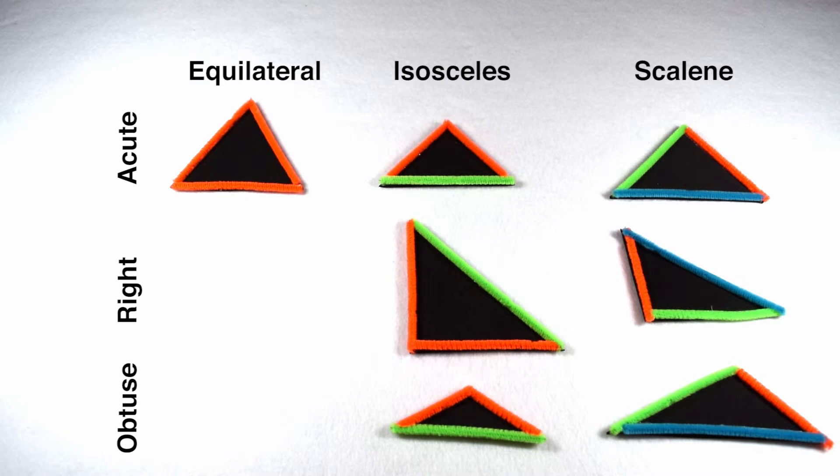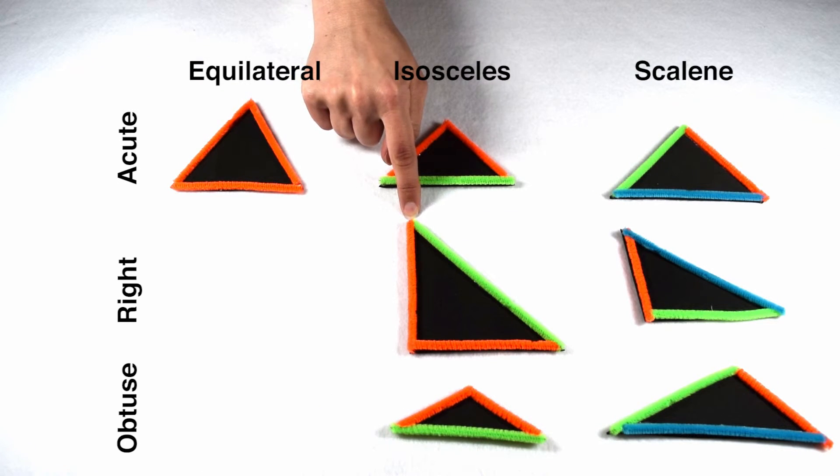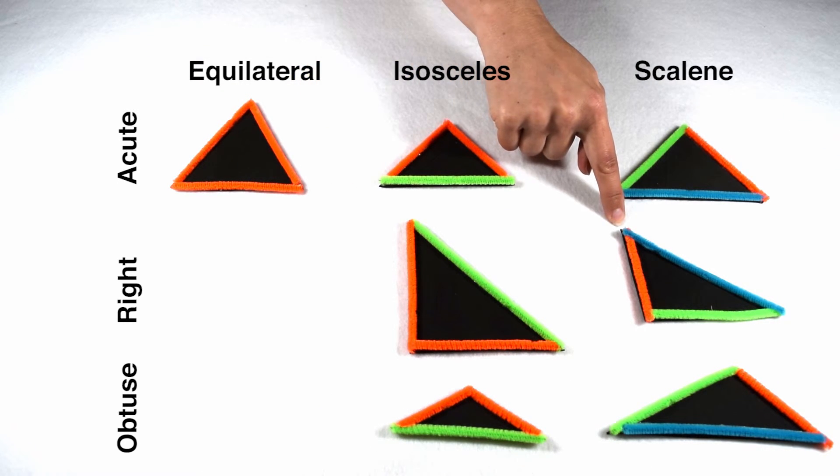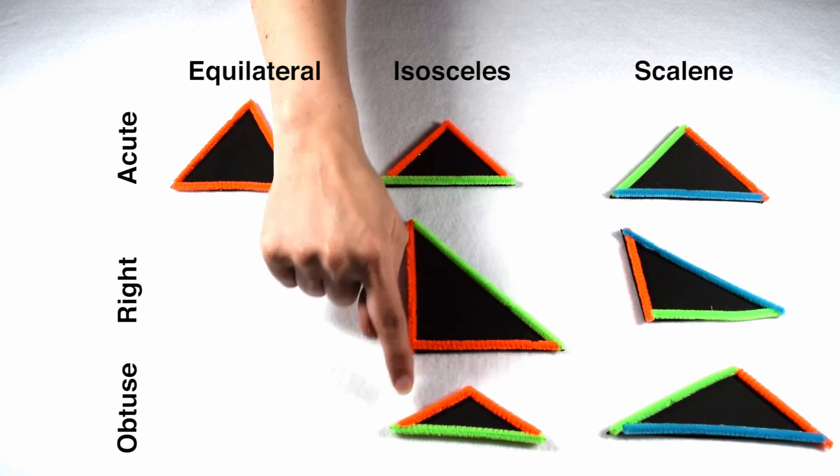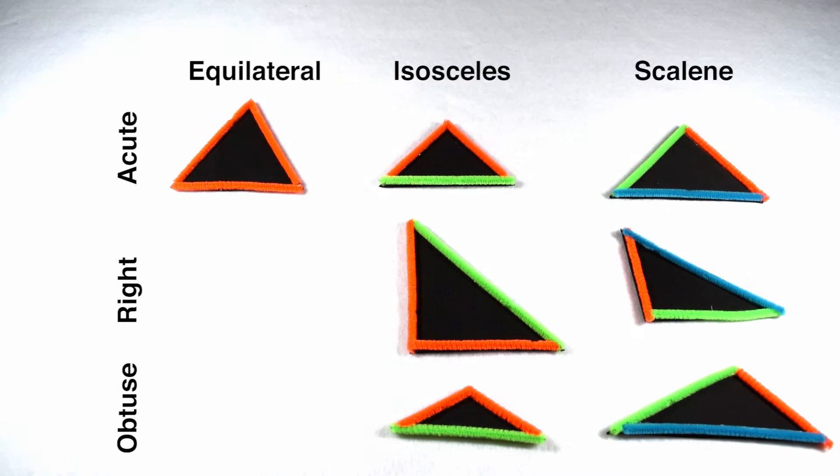The seven different triangles that we can create are an equilateral acute triangle, isosceles acute, and scalene acute. We can also create an isosceles right triangle, a scalene right triangle, we could create an isosceles obtuse triangle, and a scalene obtuse triangle.